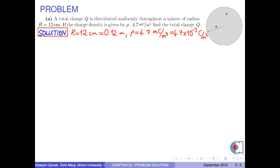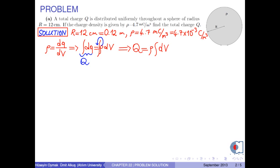The volume charge density rho is equal to dQ over dV, where dQ is the infinitesimal charge in the infinitesimal volume dV. From which we can write dQ equals rho times dV. If we take the integral of both sides, the integral of dQ is the total charge Q, and since rho is constant, it can be taken outside the integral sign. Therefore, we obtain Q equals rho times the integral of dV.